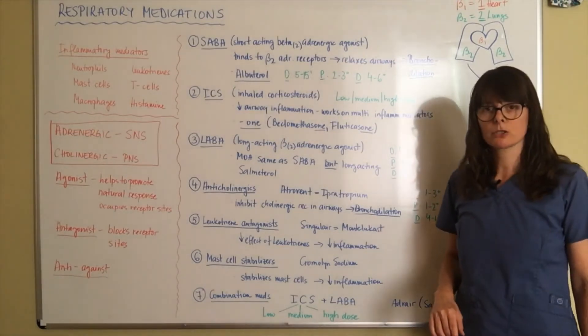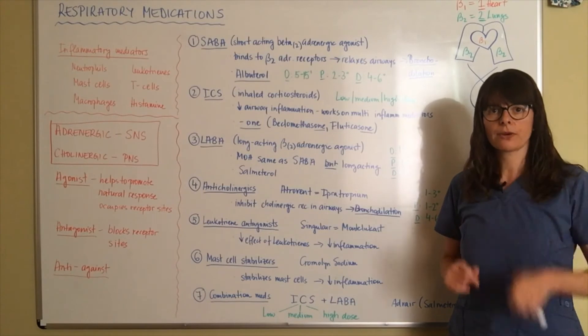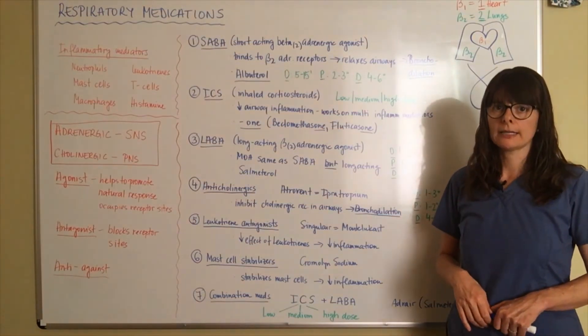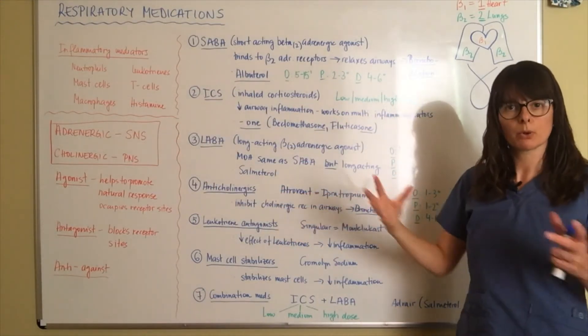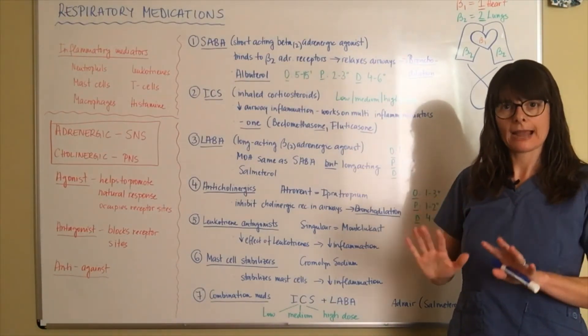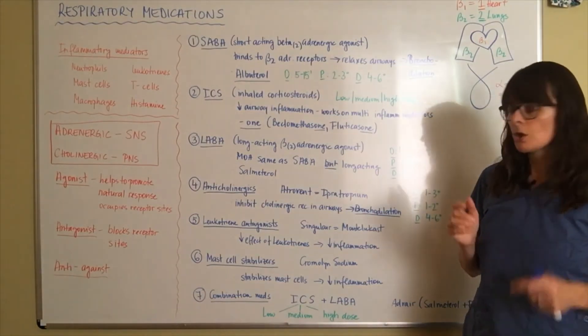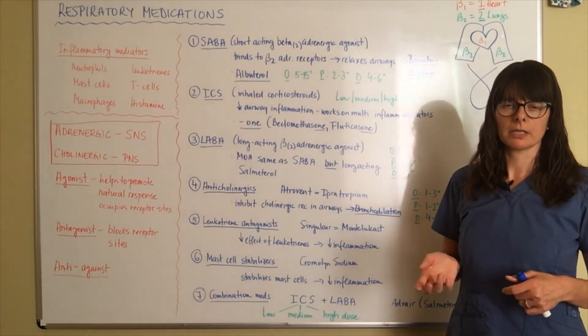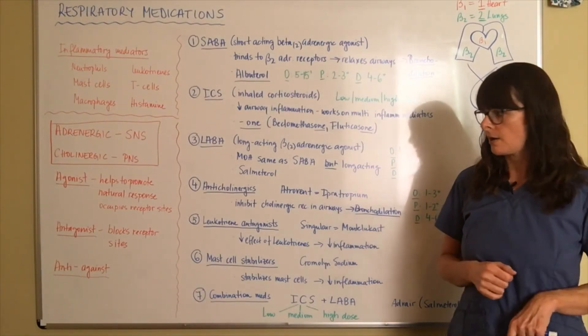Now, there are certain medications that can be given to patients that are used in combination. And one of the ones used very frequently in the emergency department is called a DuoNeb. So duo, two medications by nebulizer. And that's always a combination of albuterol, a SABA, and the Atrovent, the anticholinergic. So they both combined work together to agonize the sympathetic nervous system and antagonize the cholinergic system so that bronchodilation can occur on both pathways. Remember that every organ has innervation from sympathetic and parasympathetic nervous system receptors so that they can work either to speed things up or slow things down.